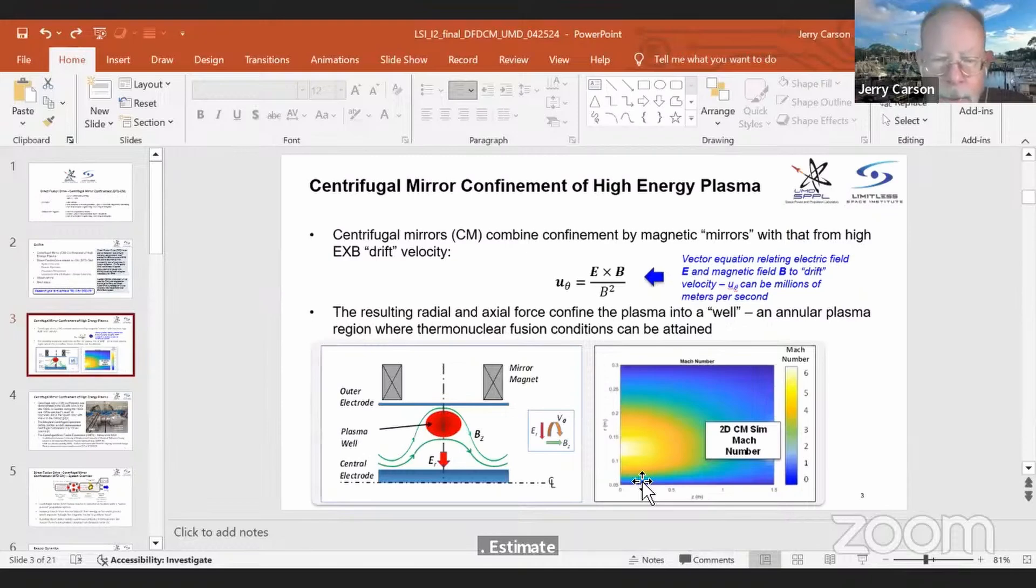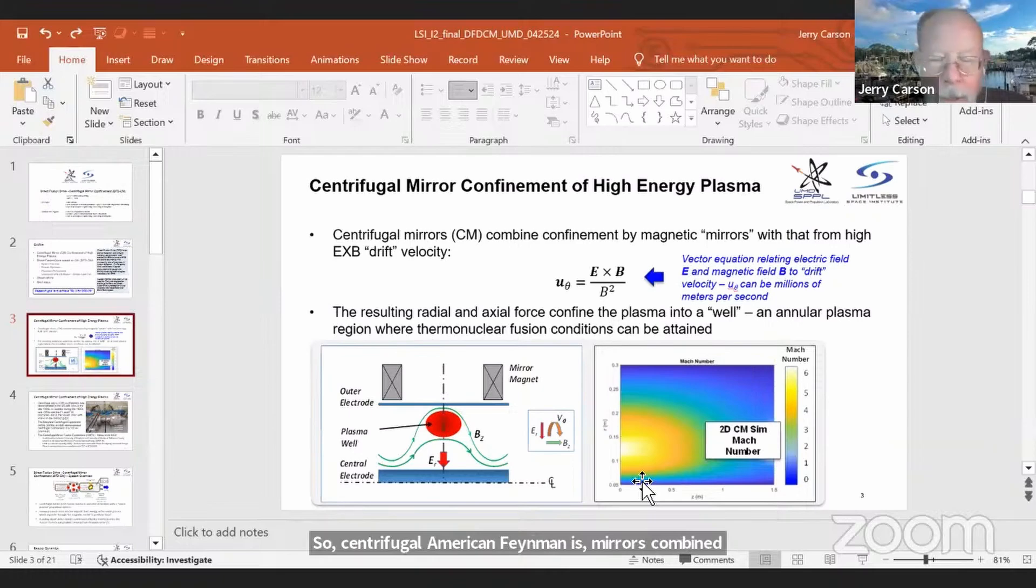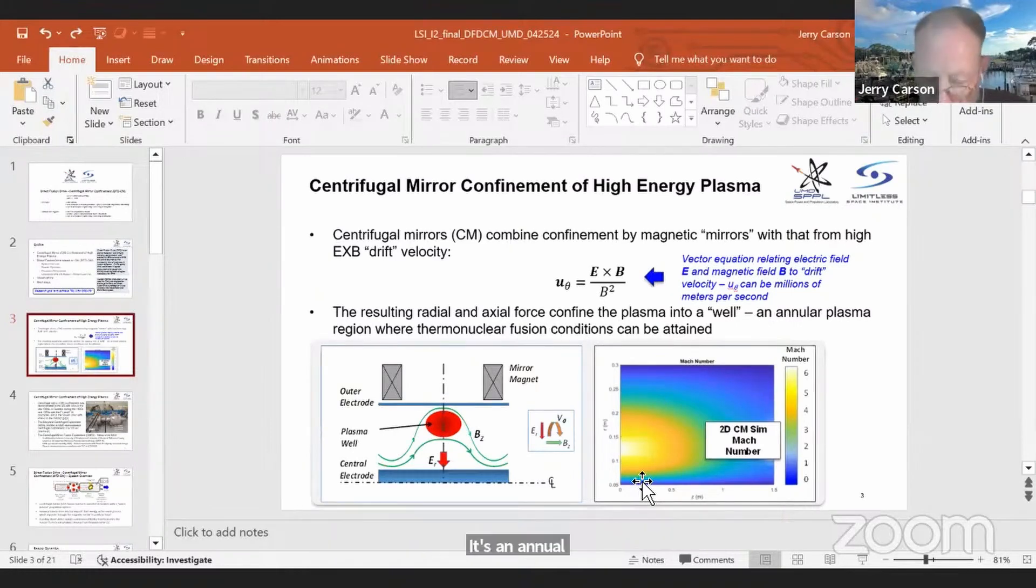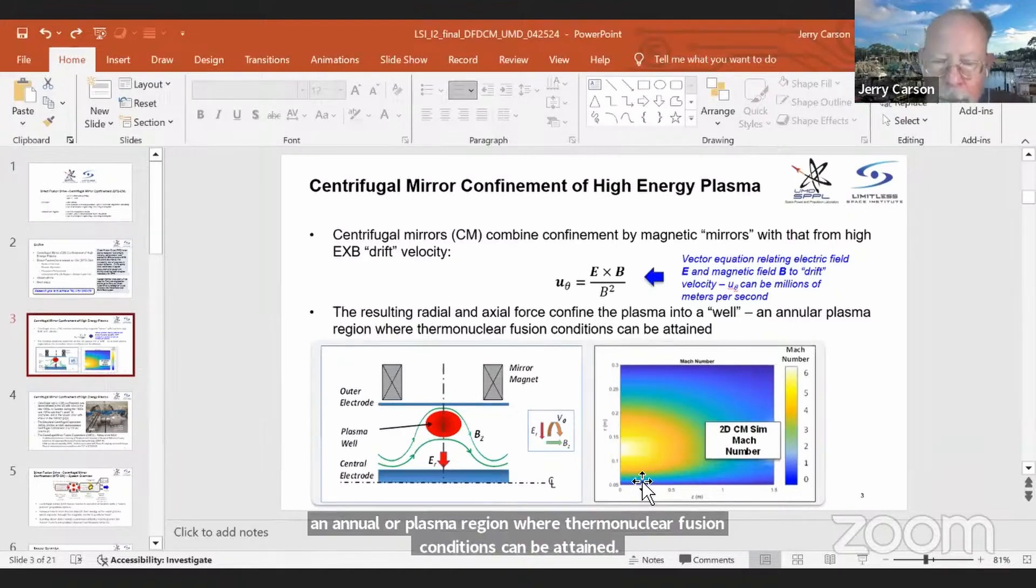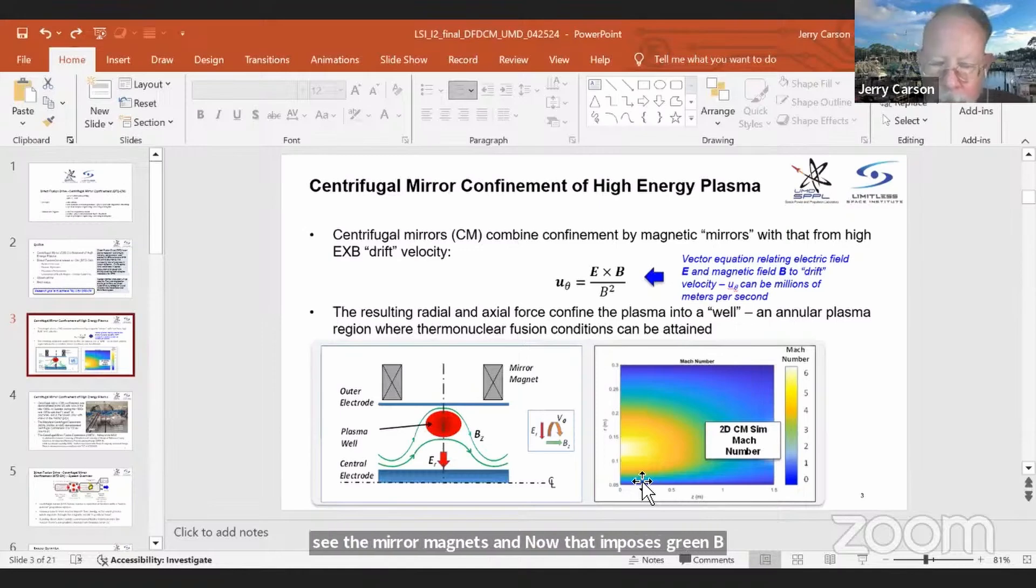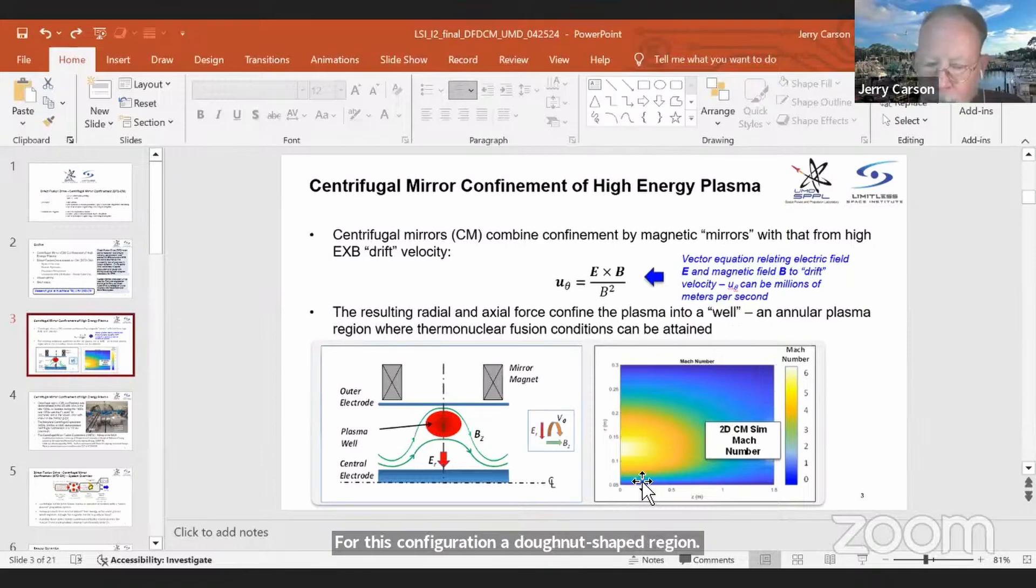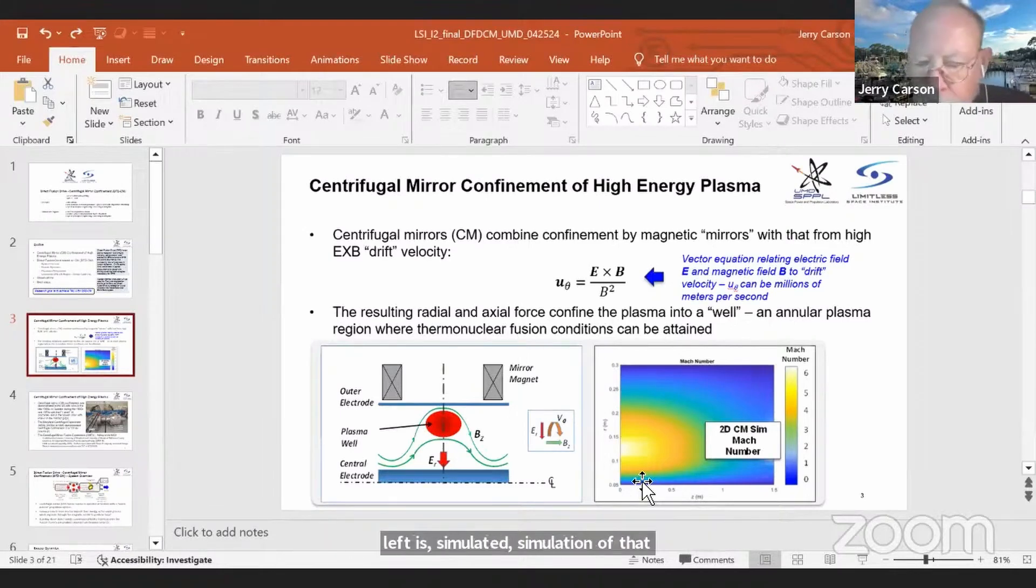So, centrifugal mirror confinement combines magnetic mirror confinement with a high E cross B drift velocity. The resulting radial and axial forces confine the plasma to a well. It's an annular plasma region where thermonuclear fusion conditions can be attained. And if you look at the schematic in the lower left, you see the mirror magnets that impose those green B field lines. And then the outer and inner central electrodes, which generate the E field, and they result in a plasma wall, which is, for this configuration, a donut-shaped region where the fusion happens. The schematic on the left is simulated, the simulation of that schematic is shown on the right. It's bisected at the midplane, so that white region to the left is one half of the plasma.